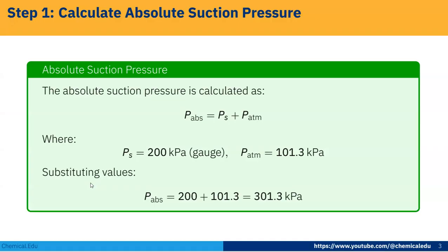First, the absolute suction pressure is calculated as P absolute equals Ps plus atmospheric pressure. Ps is given as 200 kPa gauge, and P atm is 101.3 kPa. Substituting the values, P absolute will be 200 plus 101.3, so that is 301.3 kPa.